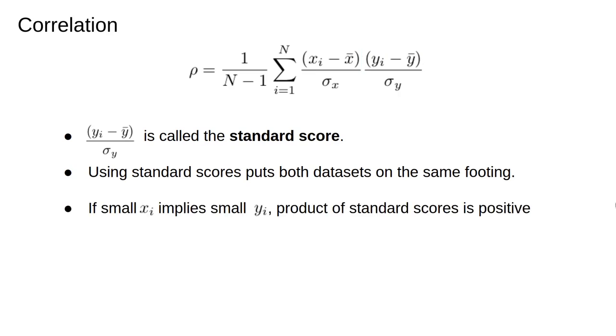Now we consider what happens when there is a linear relationship between x and y. Let's say whenever xi is small, that is less than the mean, then we also observe that yi is small. In that case, both standard scores are negative, and their product is positive.